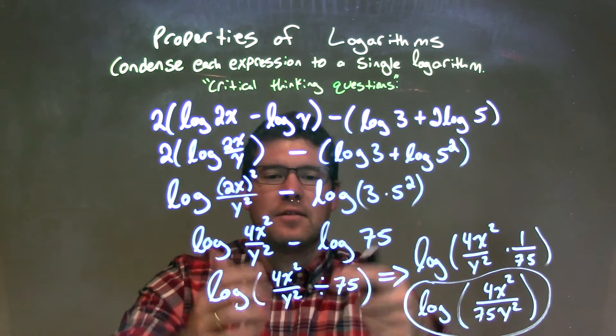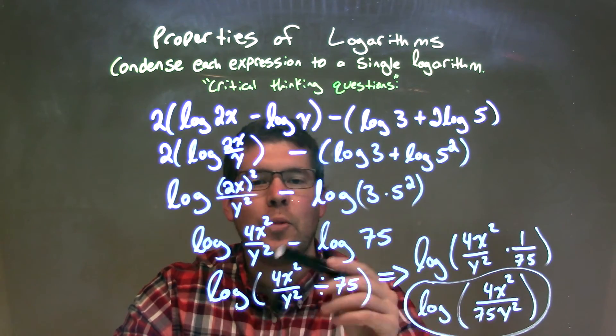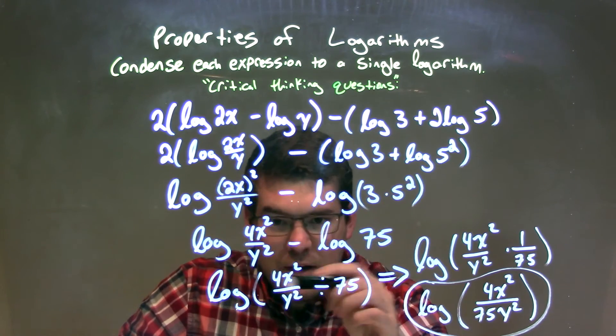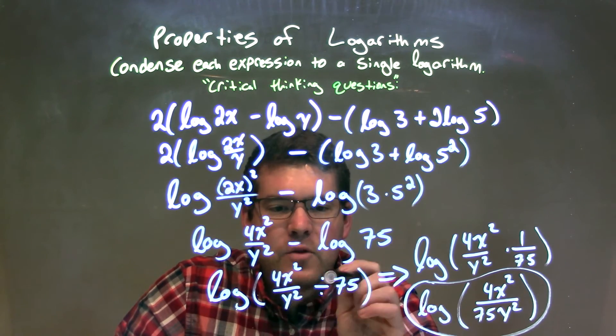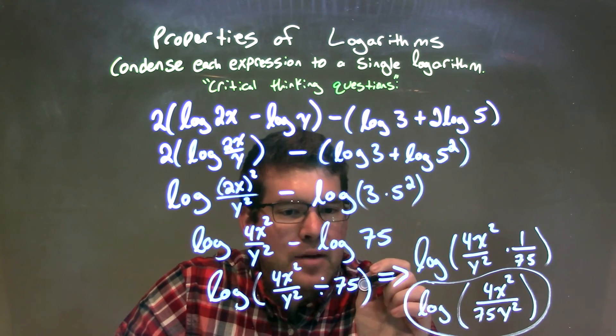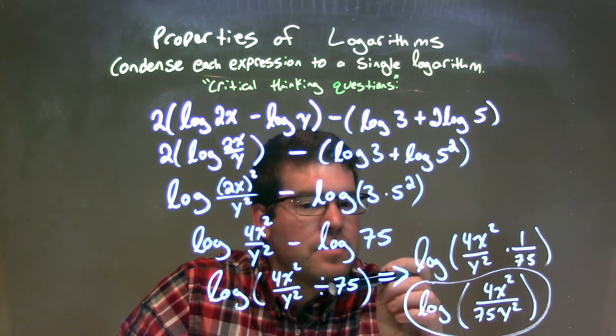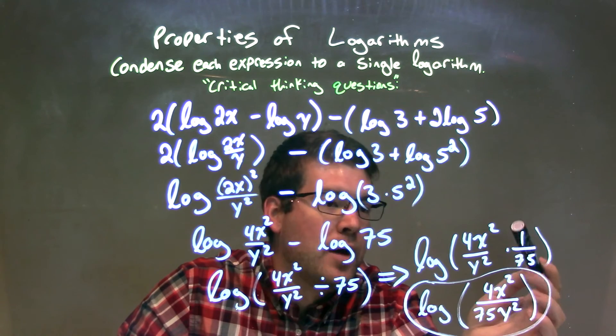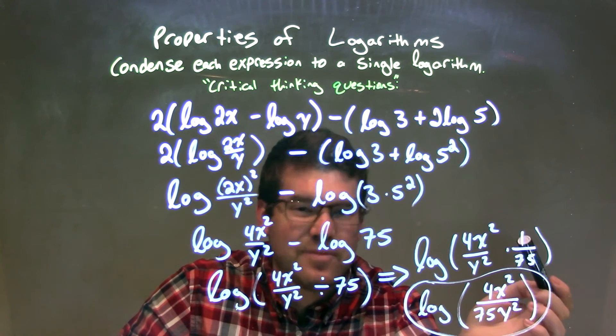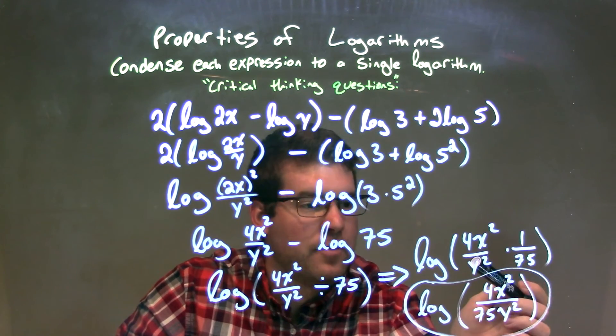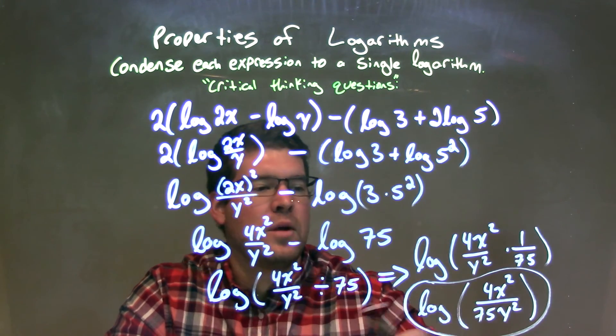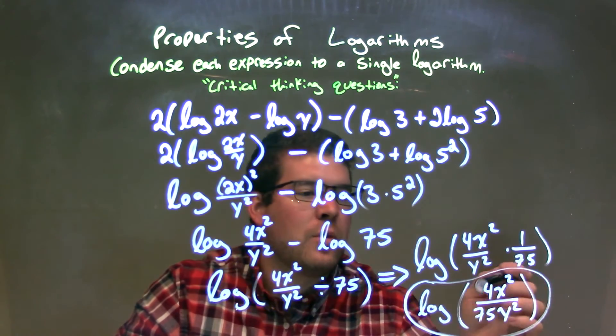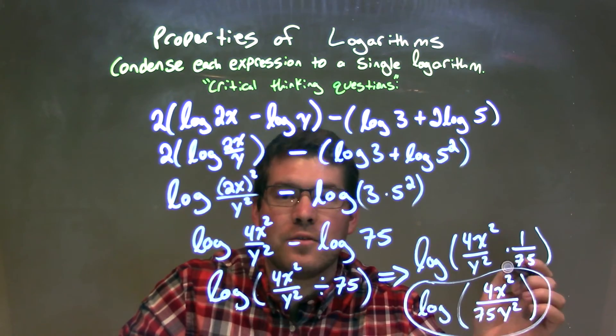Now, from there, I condensed this to be one big logarithm, and I knew we had to do division. Now, to make sure we don't lose anything, I wrote it like this, log of 4x squared over y squared divided by 75. That makes it easier to see, okay, that divided by 75 is the same thing as multiplied by 1 over 75. That helps me see that it's multiplied by 75 by y squared in the denominator, to give us, again, our final answer of log of 4x squared divided by 75y squared.